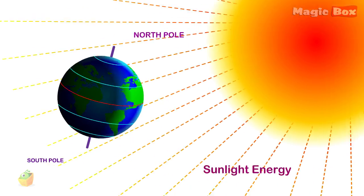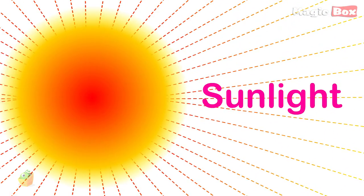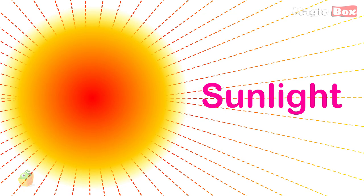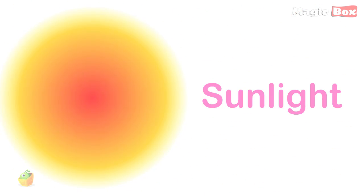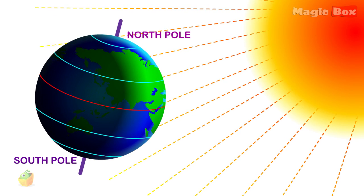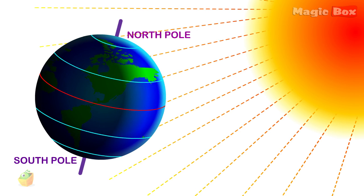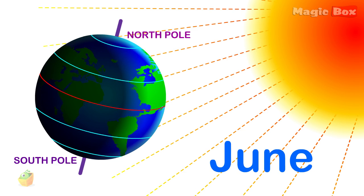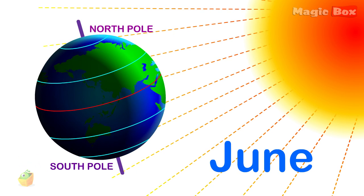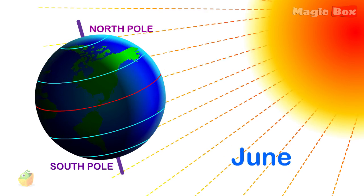Since the Sun is the energy that drives weather, if you vary that sunlight amount, then you vary the weather. Sometimes it is the North Pole tilting toward the Sun, like in June, and sometimes it is the South Pole tilting toward the Sun, like in December.